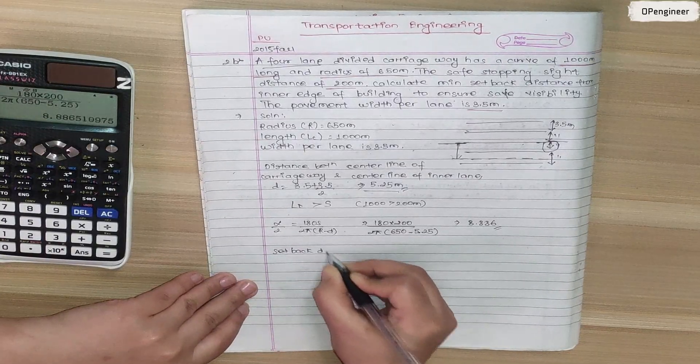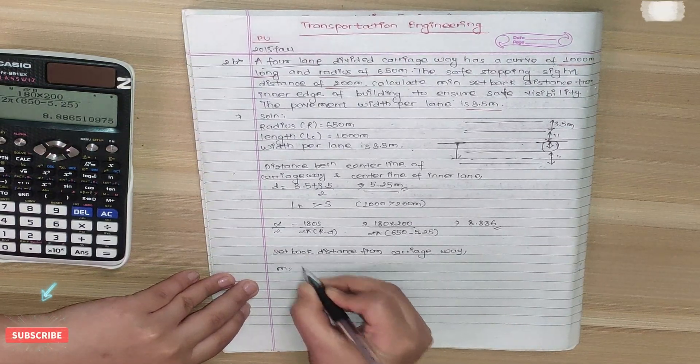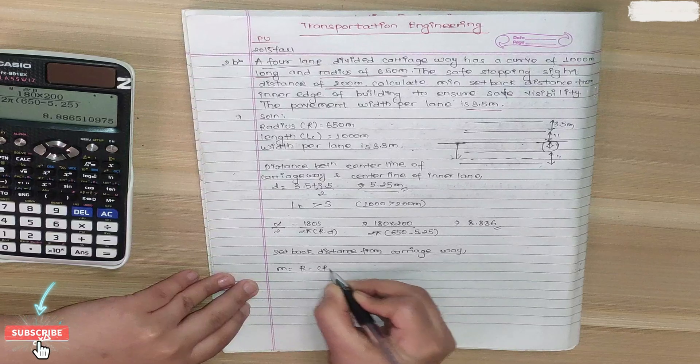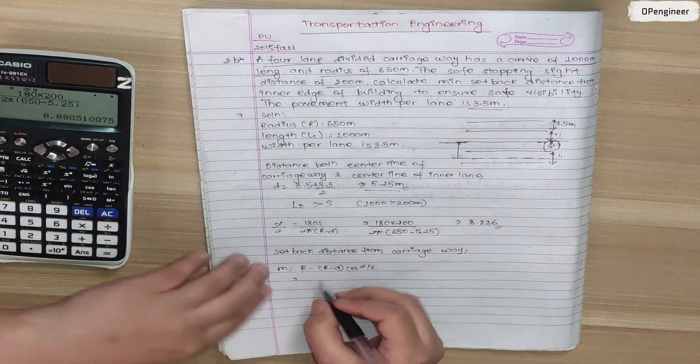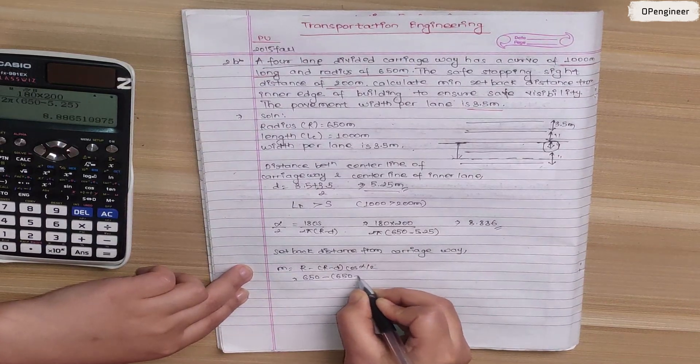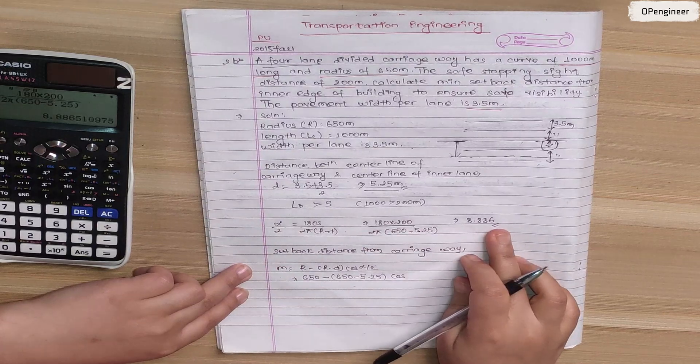Now we can calculate setback distance from carriageway. The formula is: m equals to r minus (r minus d) cos alpha by 2. So radius is 650 minus (650 minus d which is 5.25) cos alpha by 2.